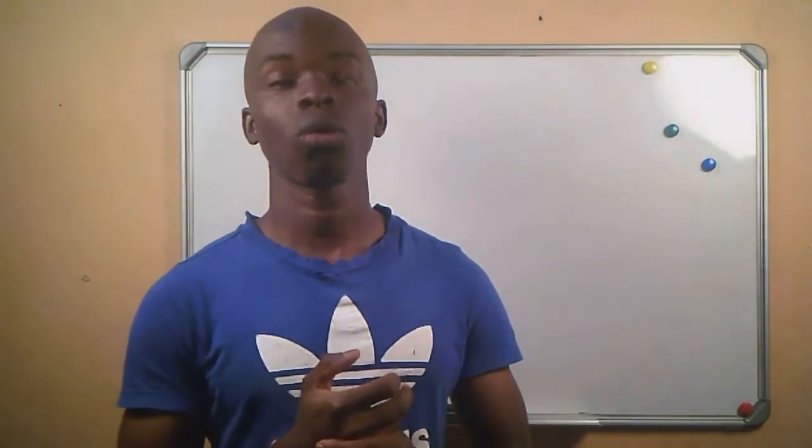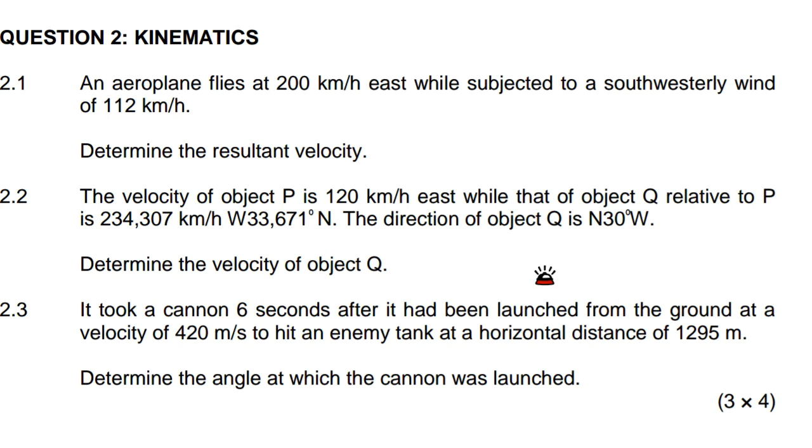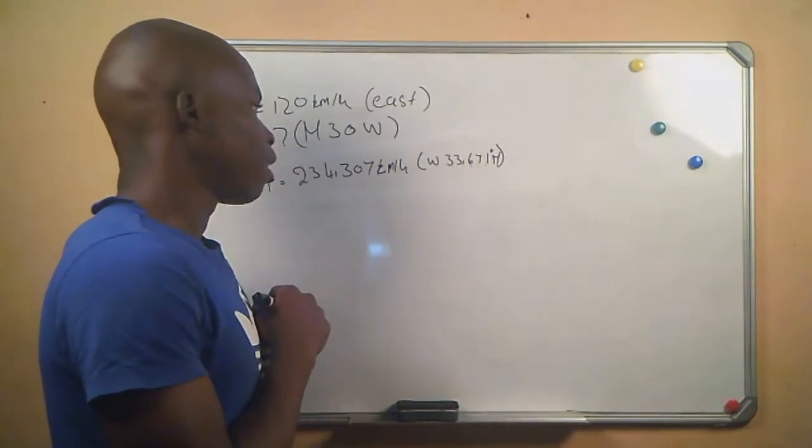So the question that we are doing today is taken from a question paper that was written on 1 August 2019. And it reads as follows: the velocity of object P is 120 kilometers per hour east, while that of object Q relative to P is 234.307 kilometers per hour west 33.671 to the north. The direction of object Q is north 30 degrees to the west. And then the question says determine the velocity of object Q.